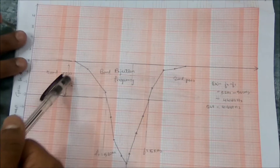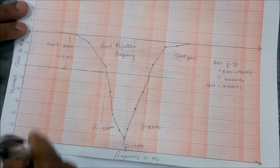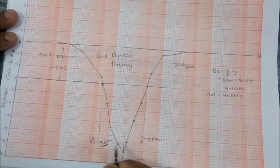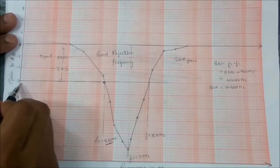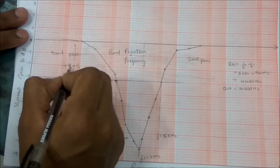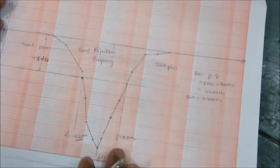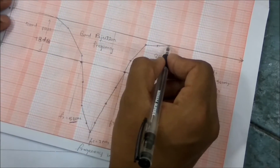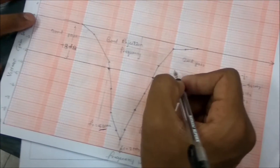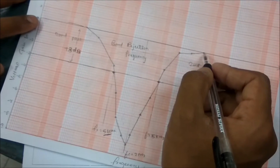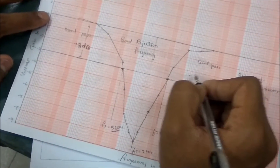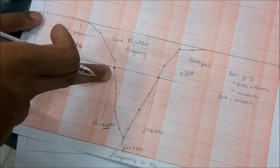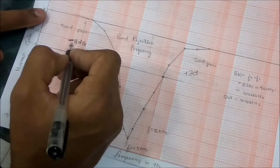The output is less than the input, that's why we are getting a negative region. At 500Hz — practically we are getting about 560Hz — we get a -3dB point, that's the first cutoff frequency. The next cutoff frequency is at 5kHz, where we again go from 0 to -3dB — that is the higher cutoff frequency. Since it's a rising sweep, the gain goes from -3dB back toward 0.